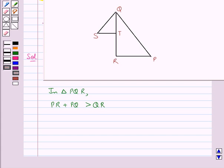Now, from the figure, you can see that QR is equal to QT plus RT. So, this gives us PR plus PQ is greater than QT plus RT.